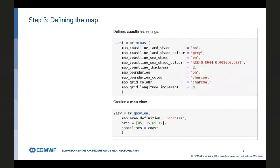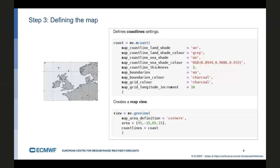In the next step, we define a map. First, we define the coastline style. We will use land shading. This is done via the mcoast function call. And then we define the actual view using the geoview function. This function by default is implementing a cylindrical projection. We set the area and set the coastline style as well. So this is how it will look in the final map.